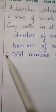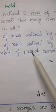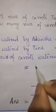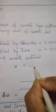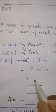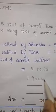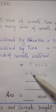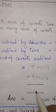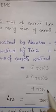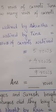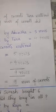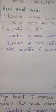So you will write: therefore, total number of rows of carrots watered is equal to five rows plus four rows. Now let's add five plus four. How much is five plus four? It is nine. Nine rows. So you will write the answer here: answer is equal to nine rows of carrots.